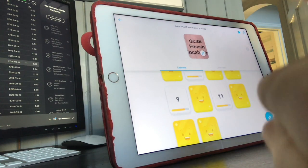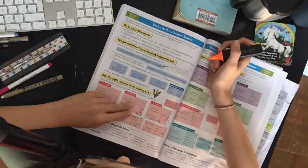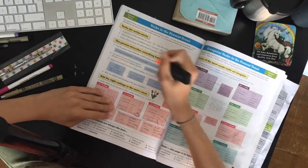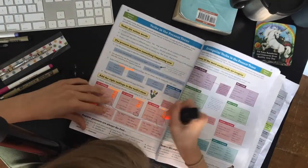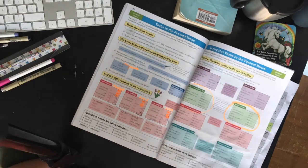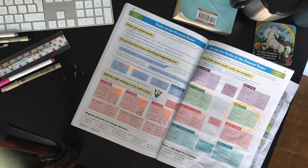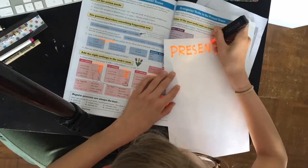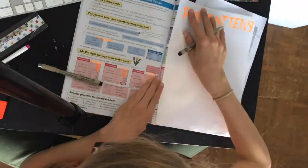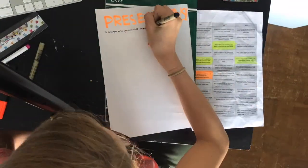And then I revised the present tense because obviously that's such an important part of all languages. So I just went through and highlighted stuff that I needed to work on. And then to finish off with French, I made a page of notes on the present tense just to help me remember stuff, and I find this a really good technique to use to revise.